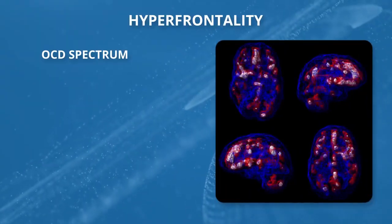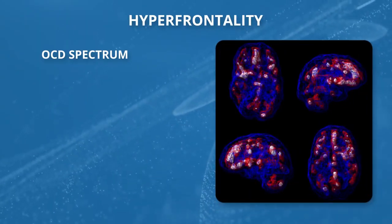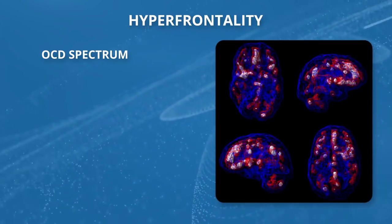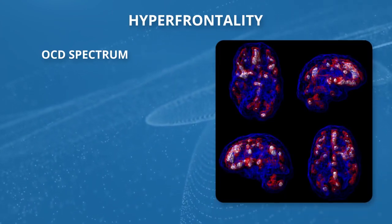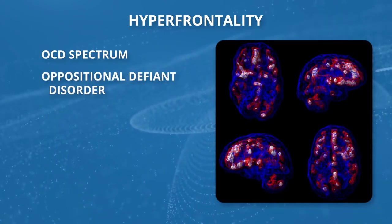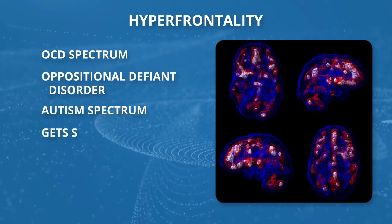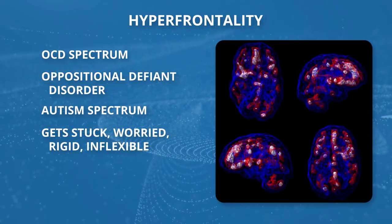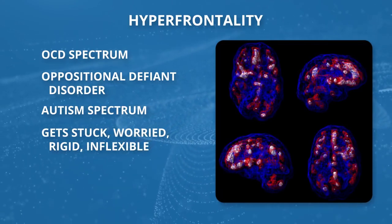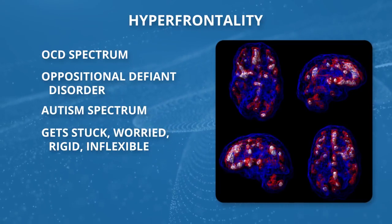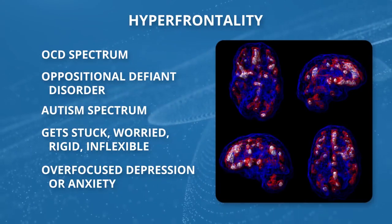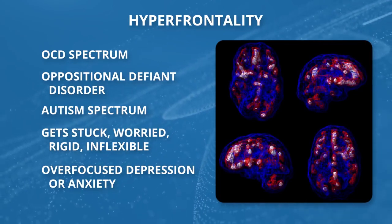There's another pattern called hyperfrontality — it means your frontal lobes are working too hard. It's classically seen in the research literature with OCD, obsessive compulsive disorder, or the obsessive compulsive spectrum: oppositional defiant disorder, autism, trichotillomania. We also see it in people who get stuck, who are worried, rigid, and inflexible — if things don't go their way, they get upset — and in over-focused kinds of depression and anxiety where they just can't stop thinking about bad thoughts.